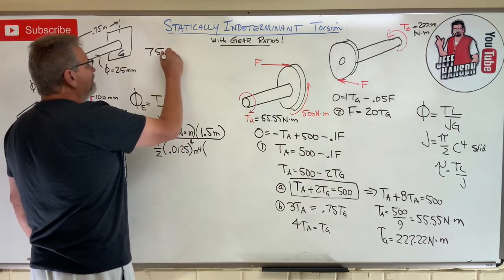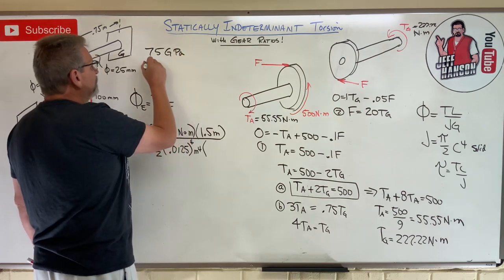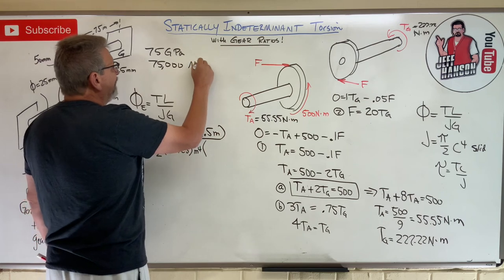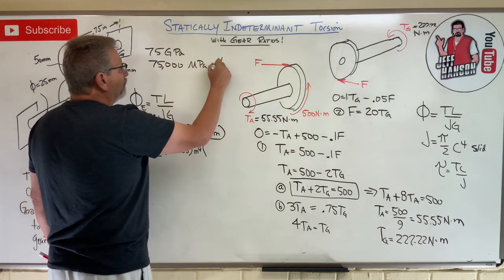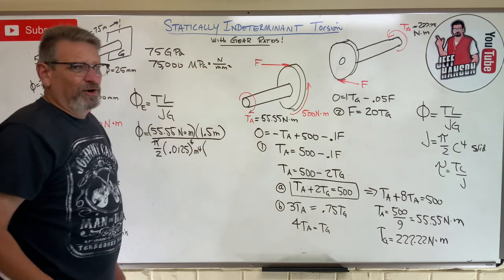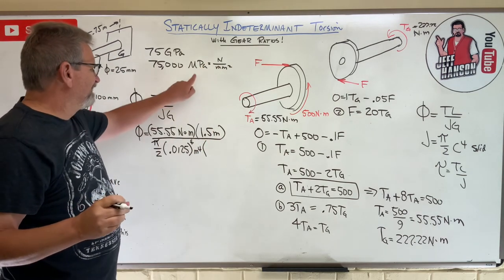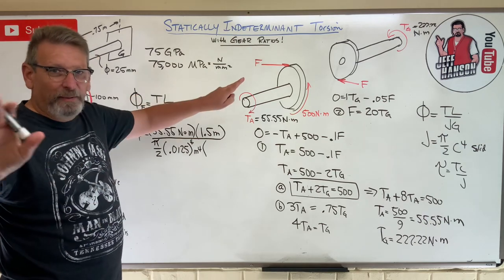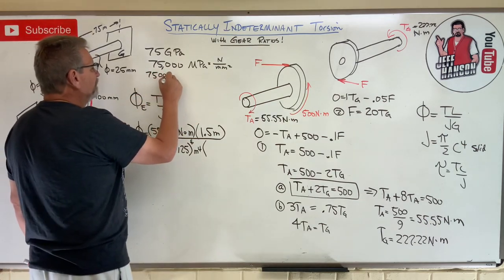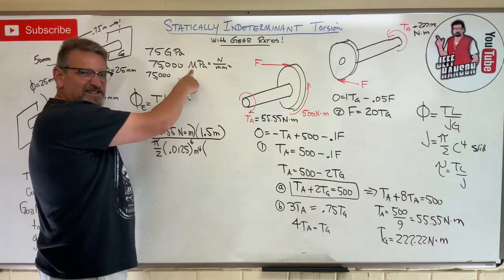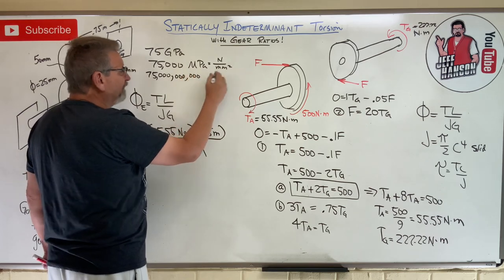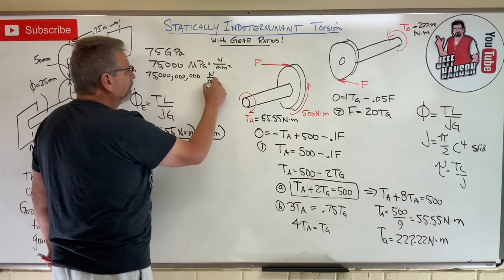75 gigapascals — put three zeros on it: 75,000 megapascals. That's Newtons per millimeter squared. But we want it per meters squared, so we need plain Pascals. That's 75,000 with six more zeros: 75 × 10⁹ Newtons per meters squared. That way Newtons cancel and all meters cancel, leaving radians.